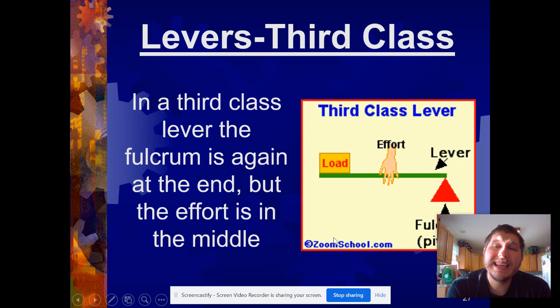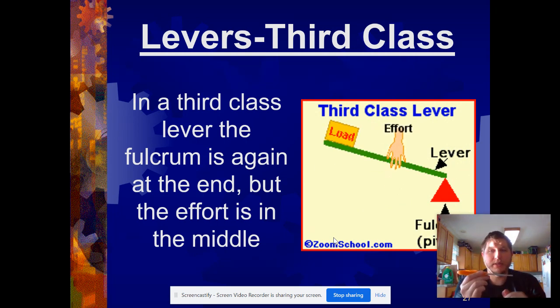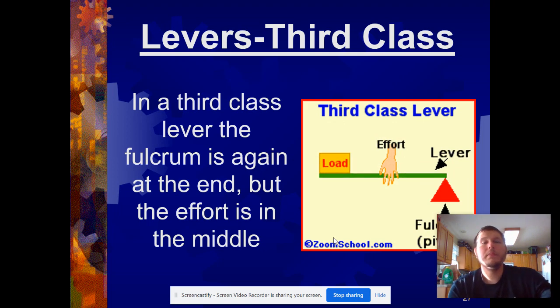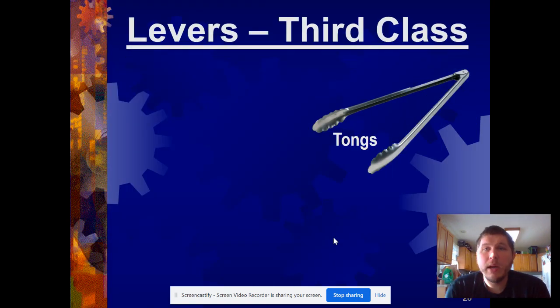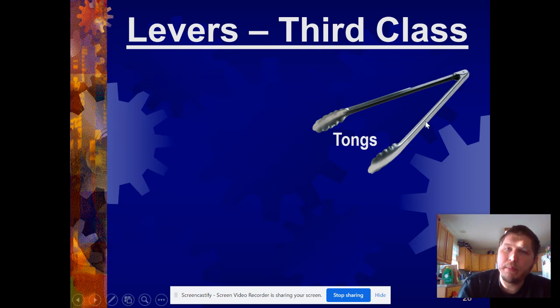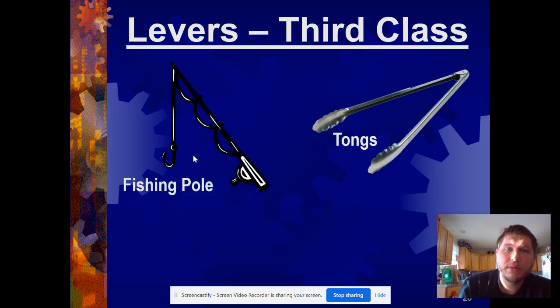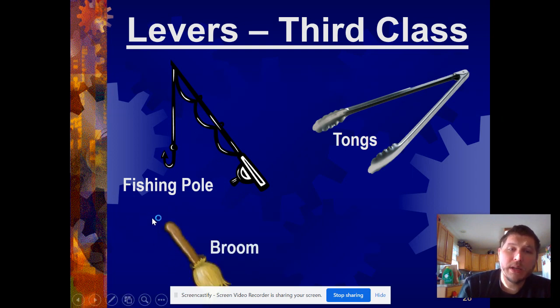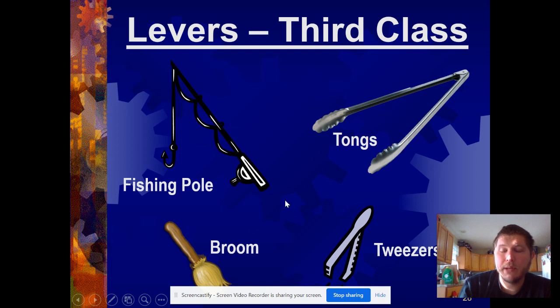Third class levers—fulcrum is again at the end. So I'm going to come back to my scissors as my example. Fulcrum's here at the end, but now my effort is in the middle and the load is at the end. So it'd be like I'm taking it and I'm trying to sling something, if you think about it. Almost like an old school catapult from like medieval times. So a pair of tongs—we have a fulcrum here in the middle. You grab hold in the middle, that's where you apply the effort, and then the load gets in the very end. A fishing pole, same way. A broom handle—fulcrum's up here. You apply the effort in the middle, and then it does the work down here at the bottom. And then tweezers are just a really small version of a pair of tongs. But again, an old school medieval catapult would also work.